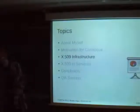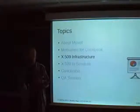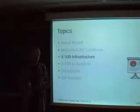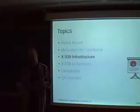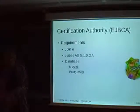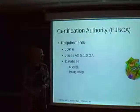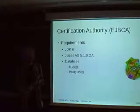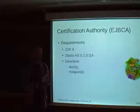On to the X.509 infrastructure. The certification authority I work with is basically just EJBCA, and of course OpenSSL as a client utility. Some of the requirements for EJBCA: you would need JDK 6, you'll need JBoss — for example, JBoss Application Server 5.1.0 GA — and you will need a database.